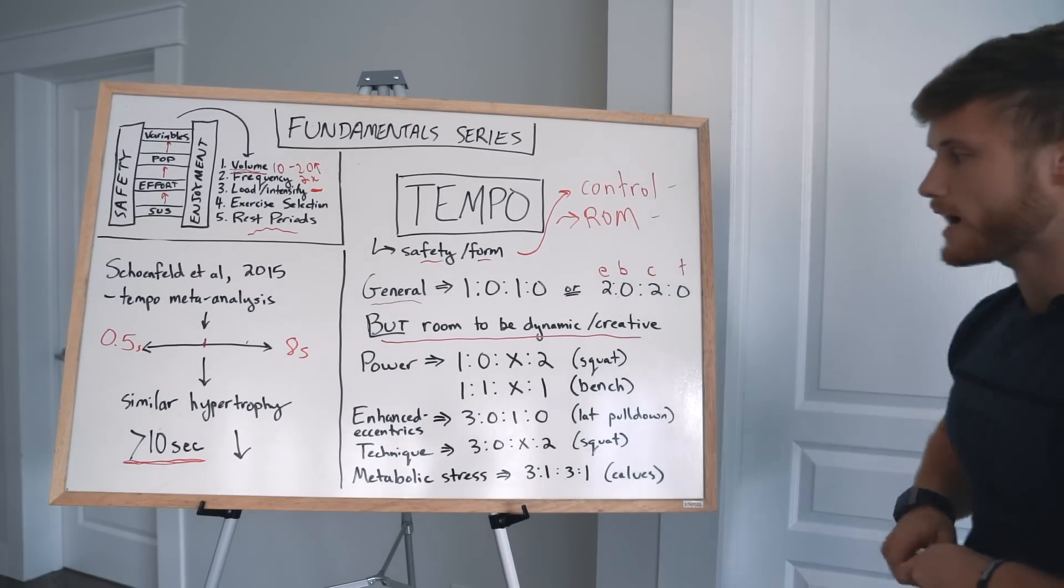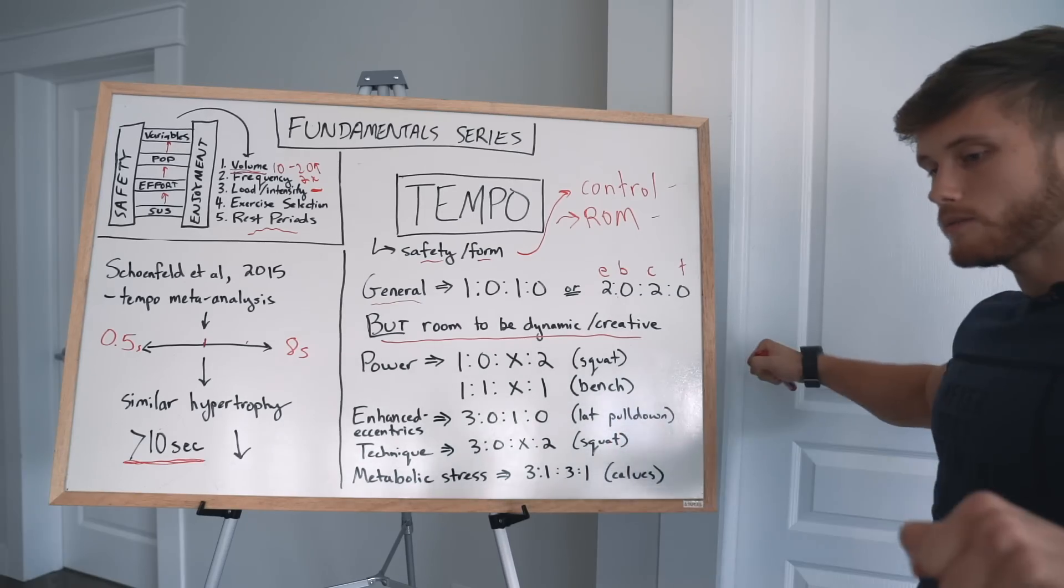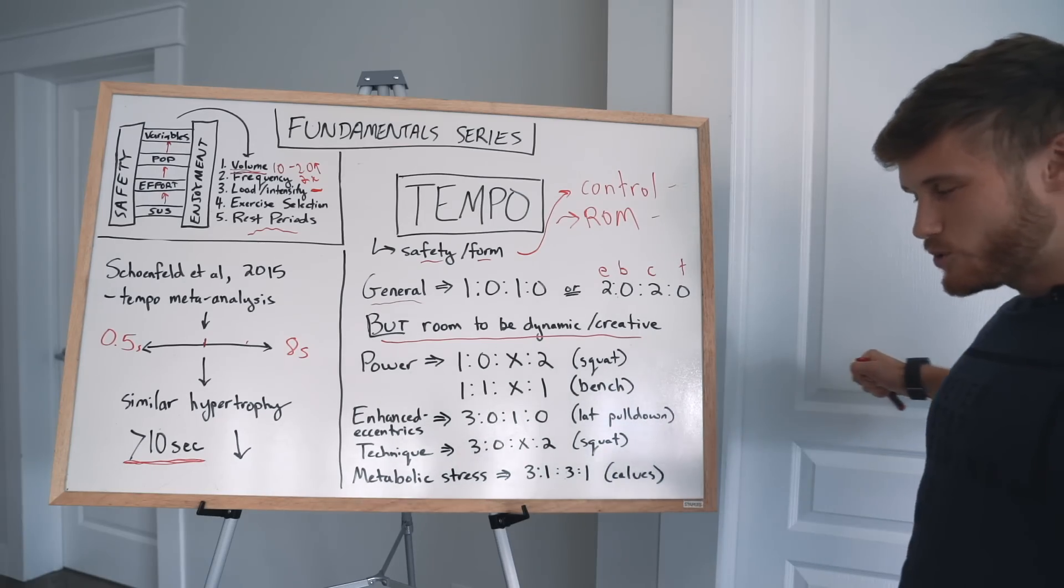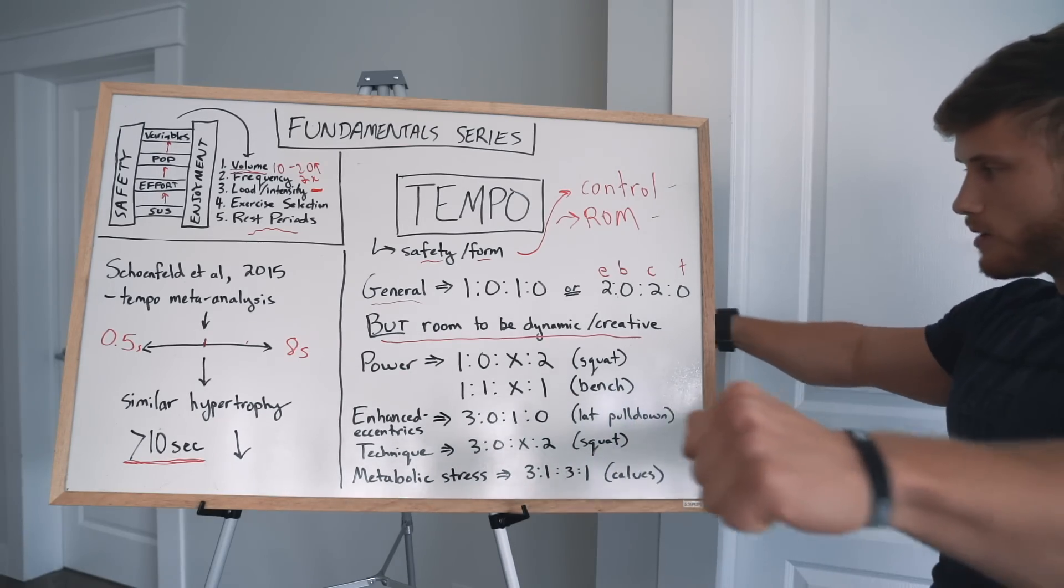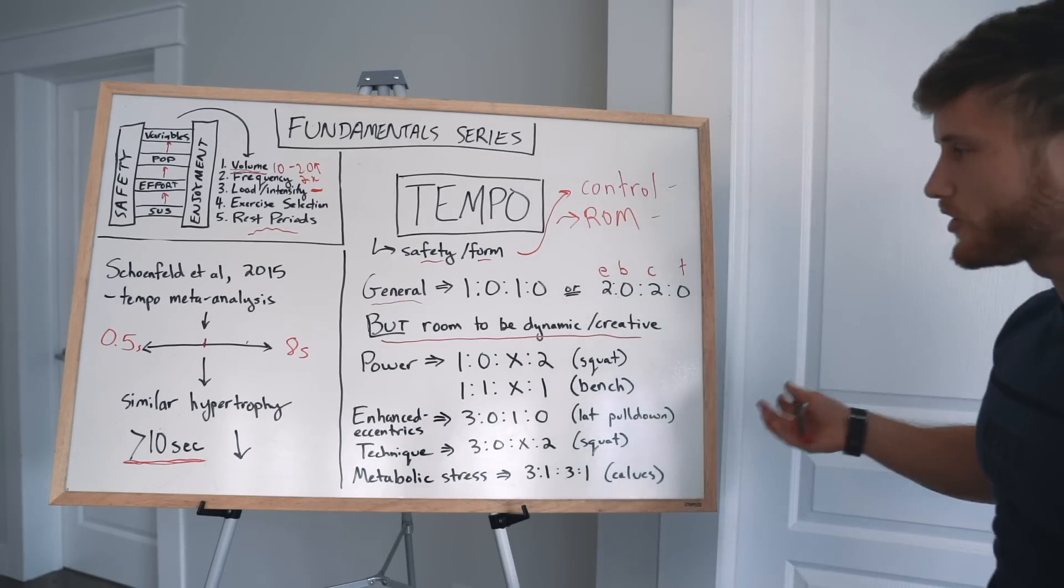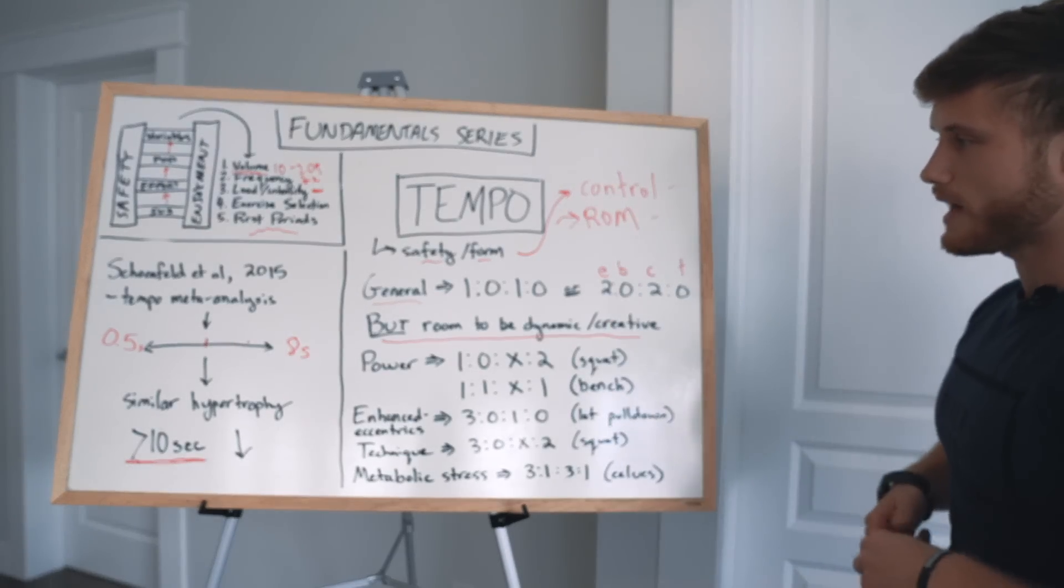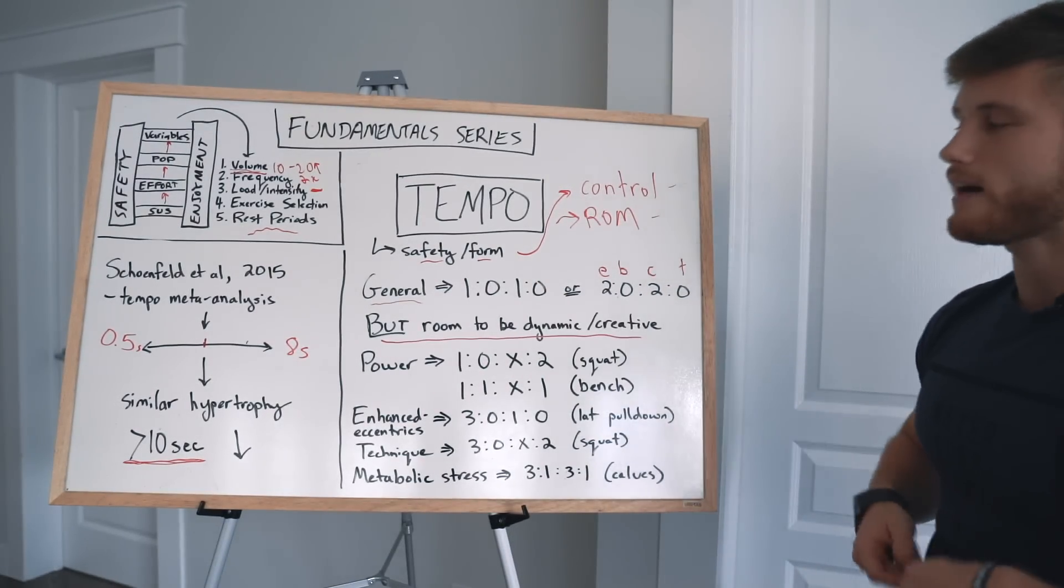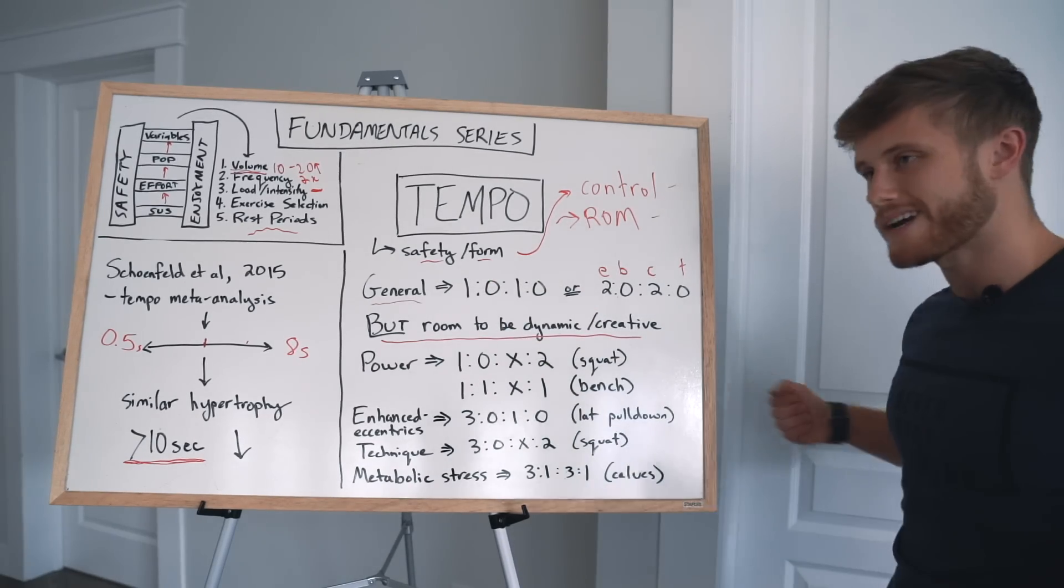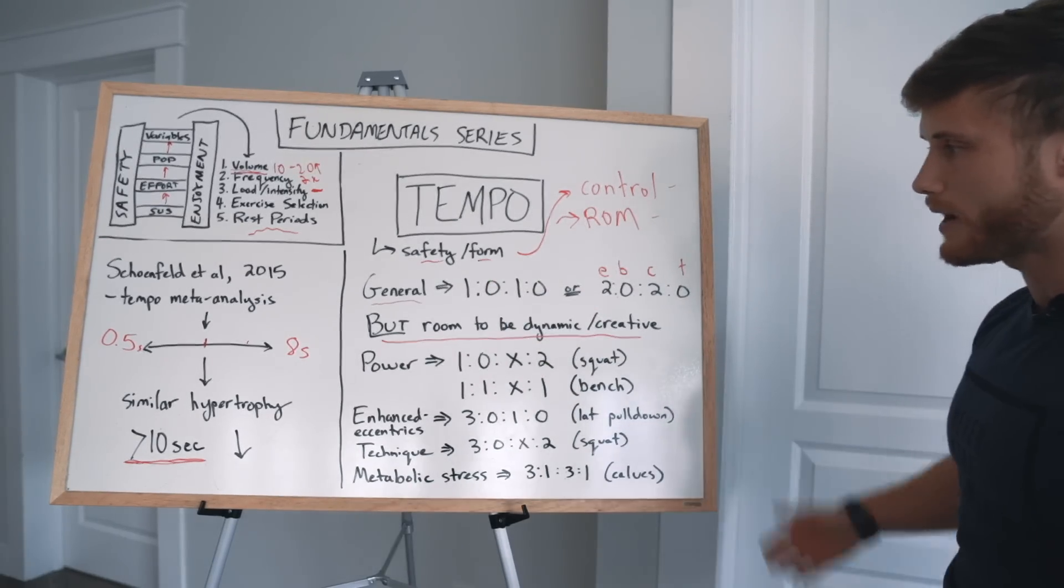So this 2-0-2 tempo in practice would look like this. You'd have one, two. You wouldn't actually pause like that. So it would look more like this, two seconds down, two seconds up, and it would be a fluid motion like this. Of course, once you get under load, it's not going to look quite as smooth as that. And I would say, in reality, my preferred general lifting tempo is something more like one second on the way down, one second on the way up.